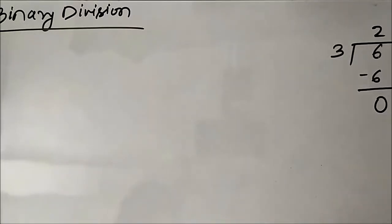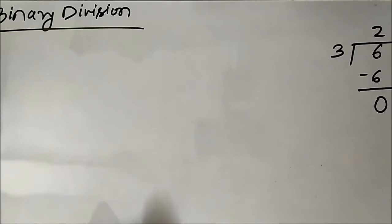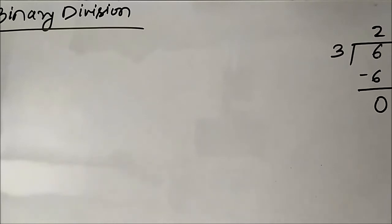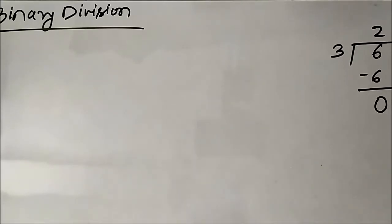Hello friends, welcome to Engineering Tutorial. In this video we are going to discuss binary division. We have already discussed binary addition, subtraction, and multiplication, so this is the final discussion related to basic arithmetic operations associated with binary numbers. Binary division is actually a combination of binary multiplication and subtraction — multiplication is used to determine the quotient and subtraction is used to determine the remainder. The concept is the same as normal division.